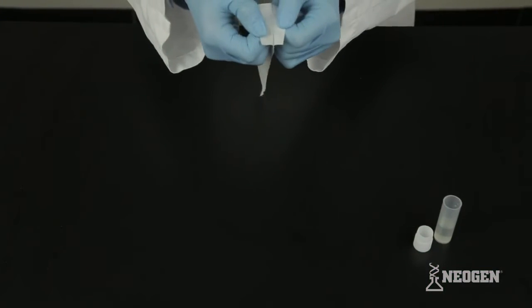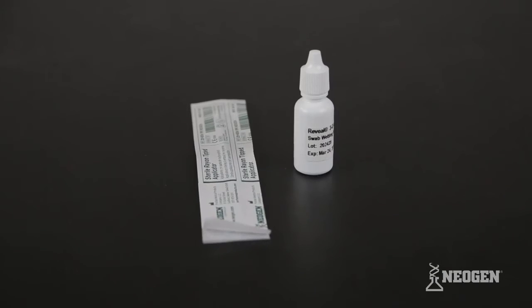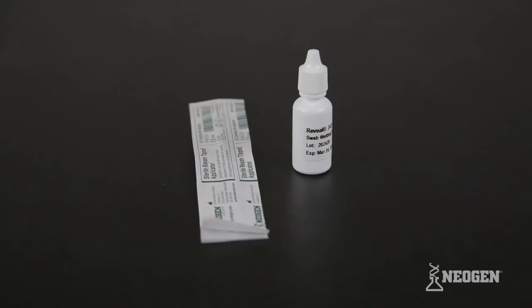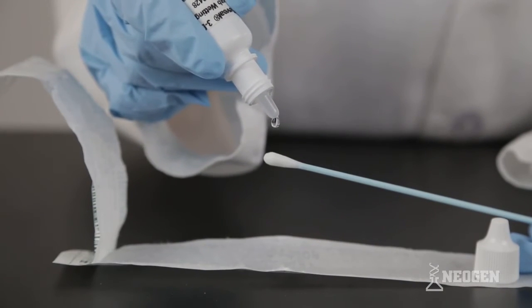If you're swabbing a dry surface, remove a sterile swab from the packaging and wet it with extraction buffer by dipping it in the sample tube. Other Reveal 3D kits that provide a swab wetting solution require you to wet the swab using two drops of swab wetting solution.